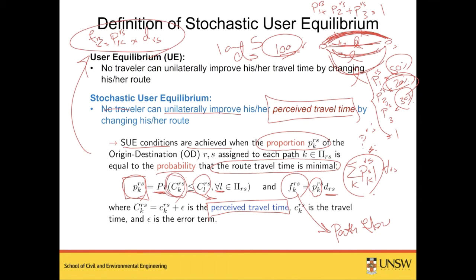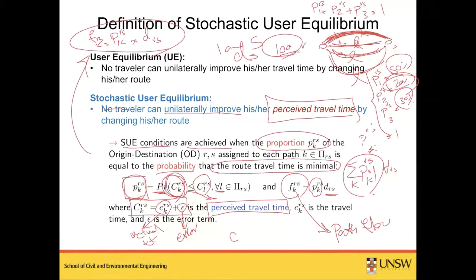Capital C is the perceived travel time, while small c is the actual travel time. We define C as the actual travel time c plus an error term epsilon. If the error term is large, the perceived travel time is far from the actual travel time. If the error term is zero, the perceived travel time equals the actual travel time exactly, and the SUE concept collapses into traditional UE — zero error means perfect knowledge.